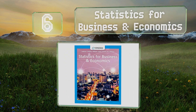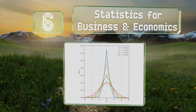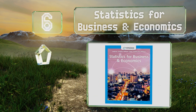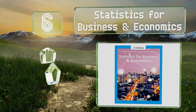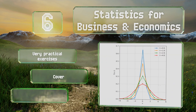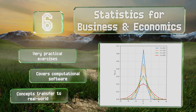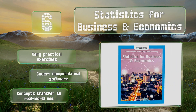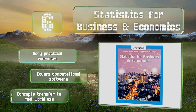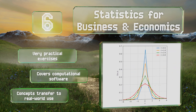Moving up our list to number 6, Statistics for Business and Economics provides a good understanding of important methodologies and illustrates how these have been used to influence the corporate decision-making process by detailing more than 350 examples of these techniques in action. It includes some very practical exercises and covers computational software. The concepts transfer to real-world use.